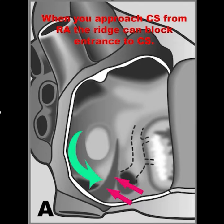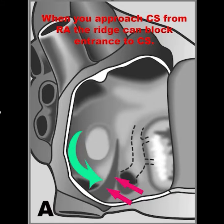Understanding the coronary sinus anatomy can help you in your approach to coronary sinus cannulation. If you approach the coronary sinus from the right atrium and you have a prominent eustachian ridge, then that can block your entrance to the coronary sinus.